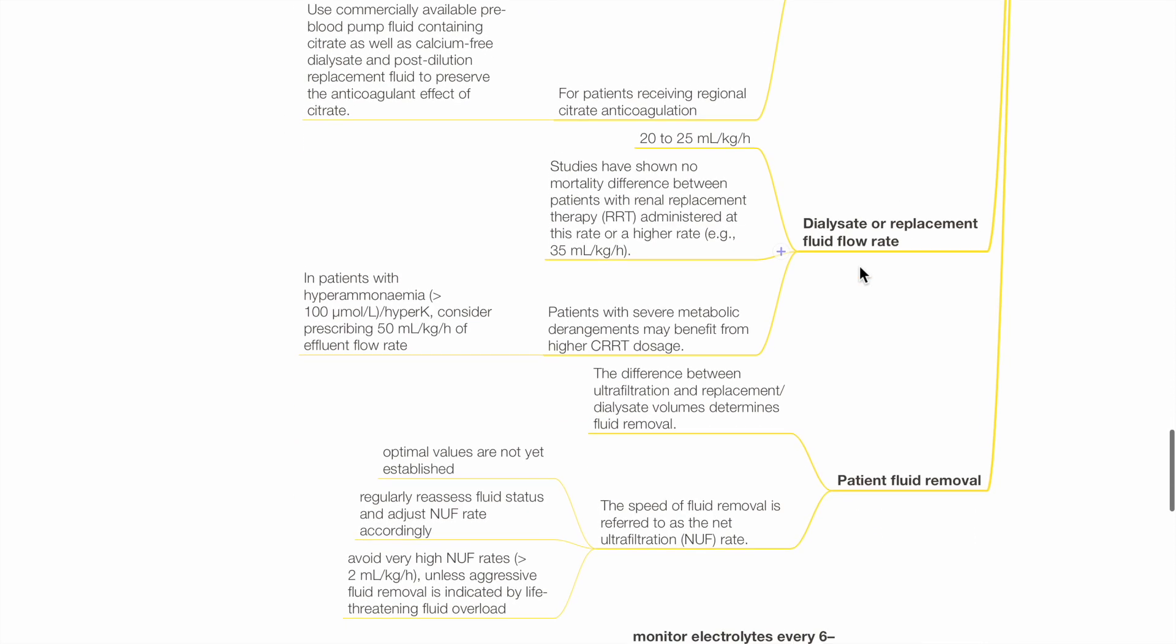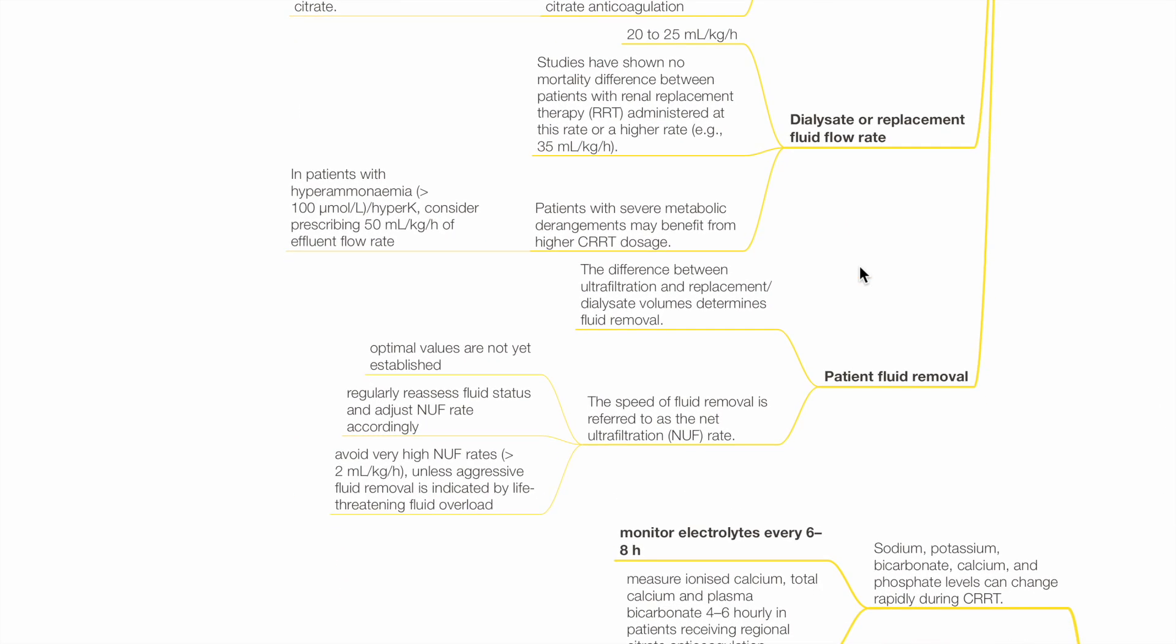Patient fluid removal. The difference between ultrafiltration and replacement of dialysate volumes determines fluid removal. Speed of fluid removal is referred to as net ultrafiltration rate. Optimal values are not yet established. Regularly reassess fluid status to adjust NUF rate accordingly. Avoid very high NUF rates more than 2 mL per kg per hour unless aggressive fluid removal is indicated by life-threatening fluid overload.